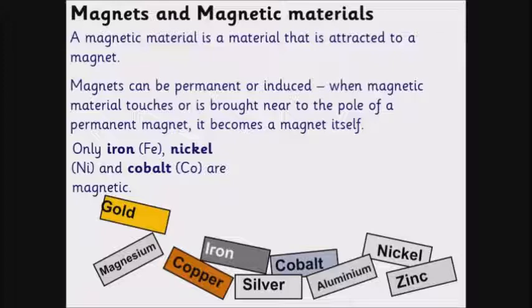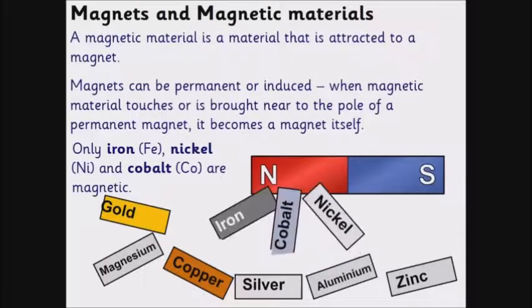The only metals that are magnetic are iron, nickel, and cobalt. So those are the only magnetic materials. But remember, these aren't magnets themselves, but you can sometimes create a magnet by bringing them close or rubbing them along the poles of a magnet, and you may have done that in lesson.